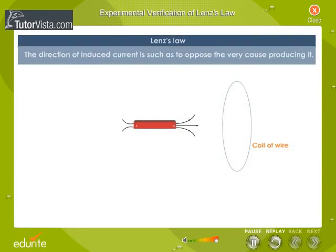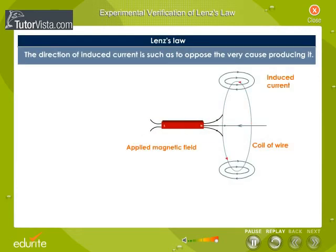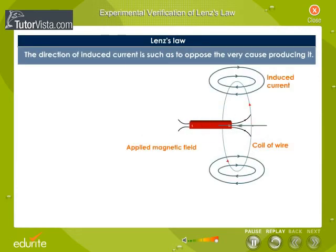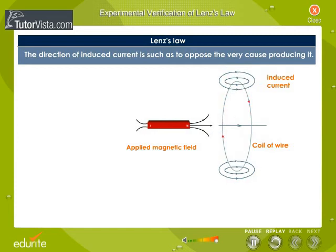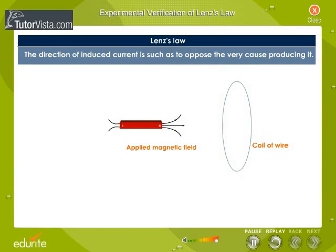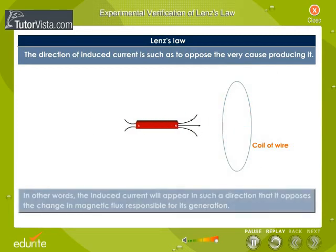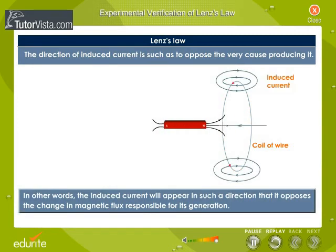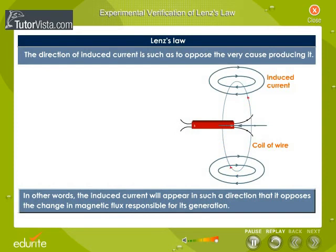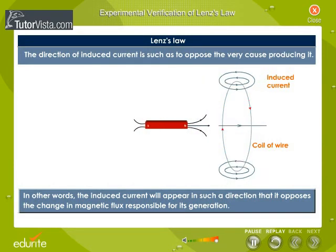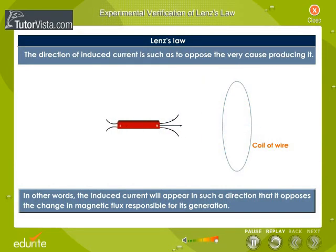Lenz's Law states that the direction of induced current is such as to oppose the very cause producing it. In other words, the induced current will appear in such a direction that it opposes the change in magnetic flux responsible for its generation.